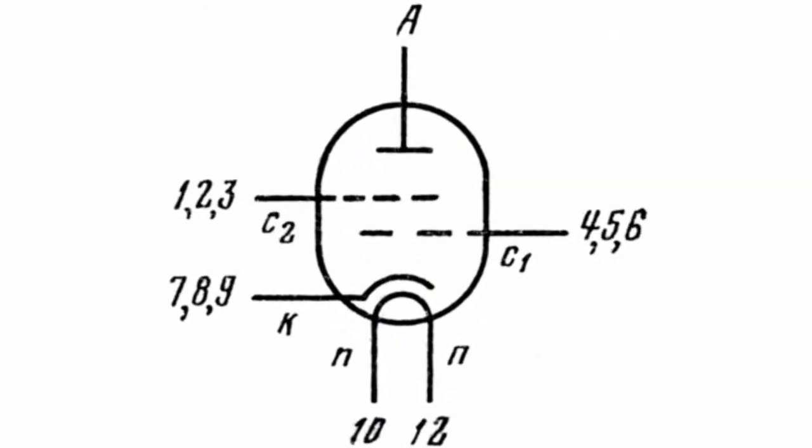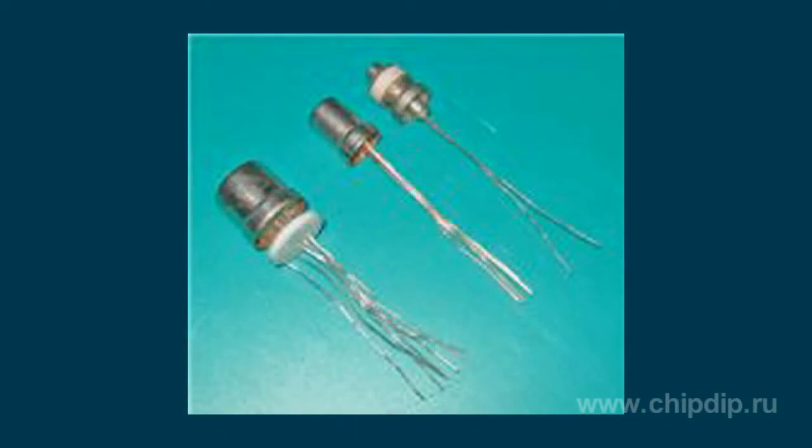It has high input resistance typical for any amplifier lamp input, and its electrical parameters are somewhat higher than transistor cascade parameters. Anode voltage is 27V.